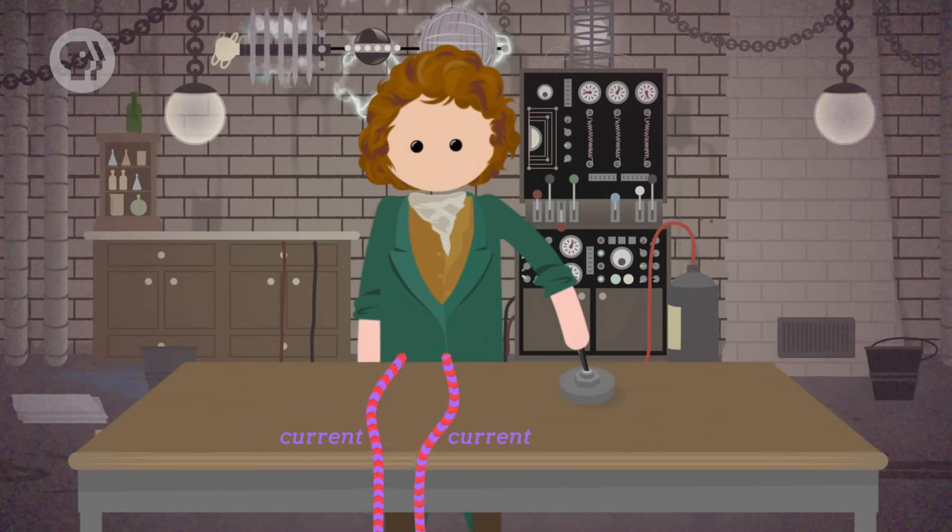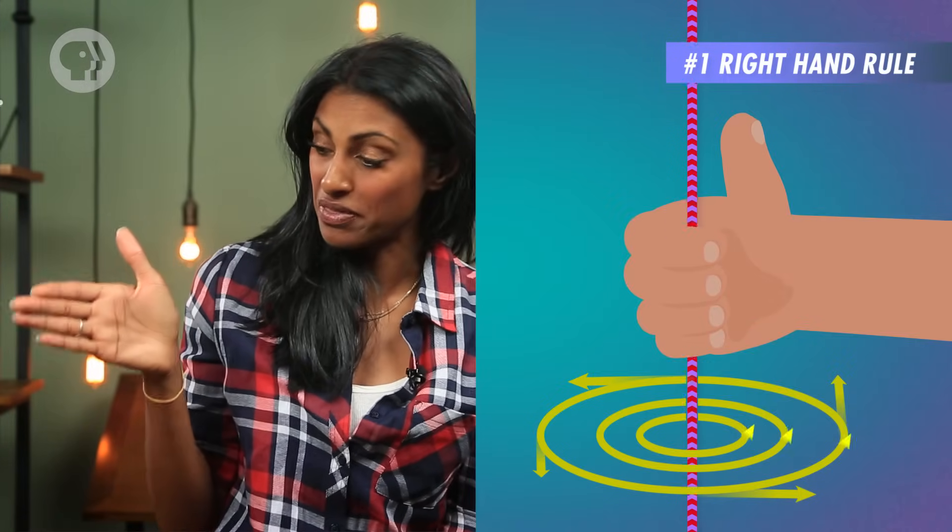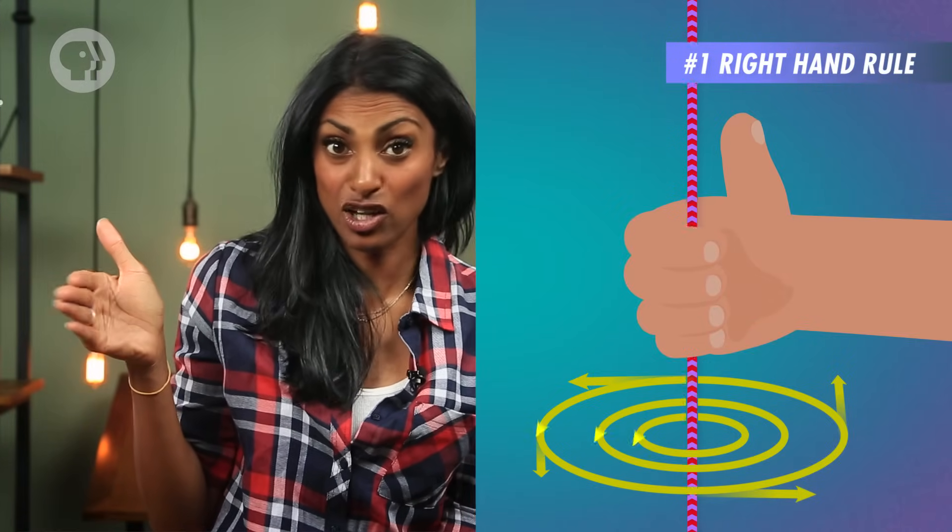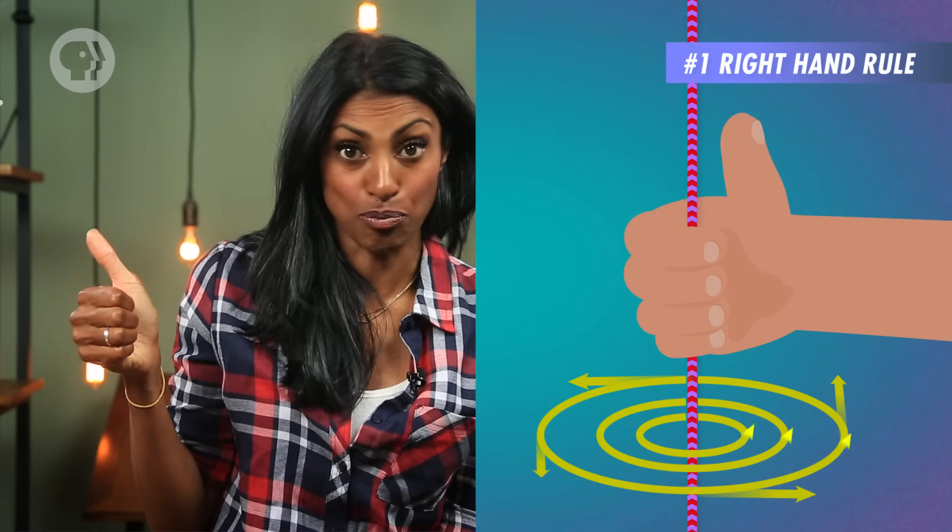That's the one that says if you point your right thumb in the direction of the current and curl your fingers, the magnetic field points in the same direction as your fingers. So first, let's look at the wires with currents running in the same direction.